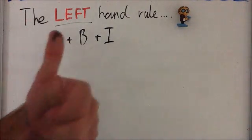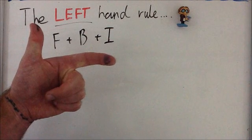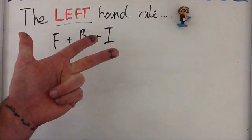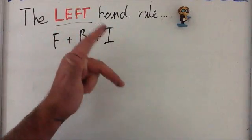The left hand rule dictates that your thumb represents the force, your index finger represents the magnetic field, and your middle finger represents the electrical current. I align these all perpendicular, at right angles to each other.